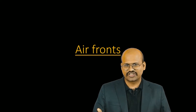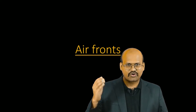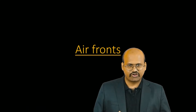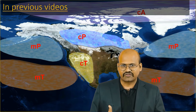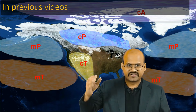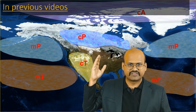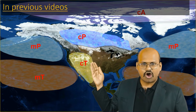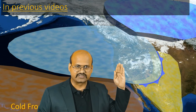Hello friends, welcome to another video of Zeta Axis. Today we will discuss air fronts. In our previous video we have seen that different kinds of air masses are formed based on the characteristics of the region below them. If it is cold then we see cold air mass formed; if the region below is hot then we see hot or warm air mass formed.